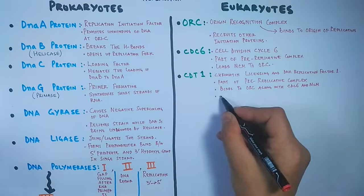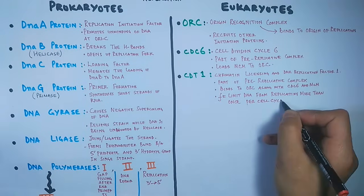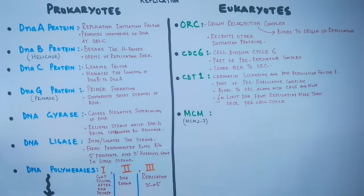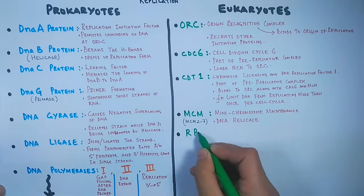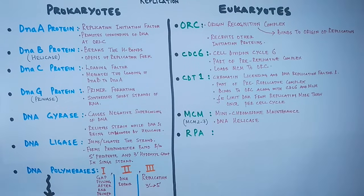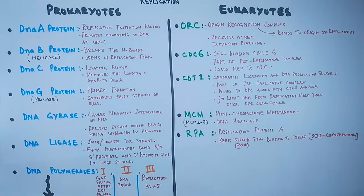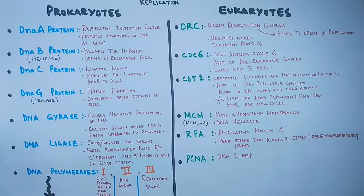We have CDT1 protein — Chromatin Licensing and DNA Replication Factor — which is also part of the pre-replicative complex. Its function is to make sure that DNA is replicated only once during the cell cycle. Then we have MCM protein — Mini Chromosome Maintenance protein — which is a DNA helicase enzyme that cuts hydrogen bonds between strands and opens up the replication fork. In eukaryotes we also have RPA protein, which keeps the strands from binding to themselves.